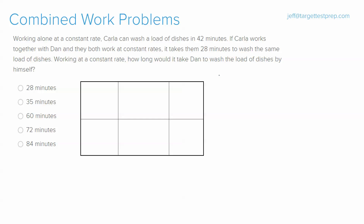For the third variation, we continue using the same combined work formula — this is key for being fast on the GMAT where two minutes per question is the target. In this problem we have Carla and Dan. Work of A plus work of B equals one, since completing a load of dishes counts as one job. Carla can wash a load of dishes in 42 minutes; working together with Dan it takes them 28 minutes. How long would it take Dan alone?